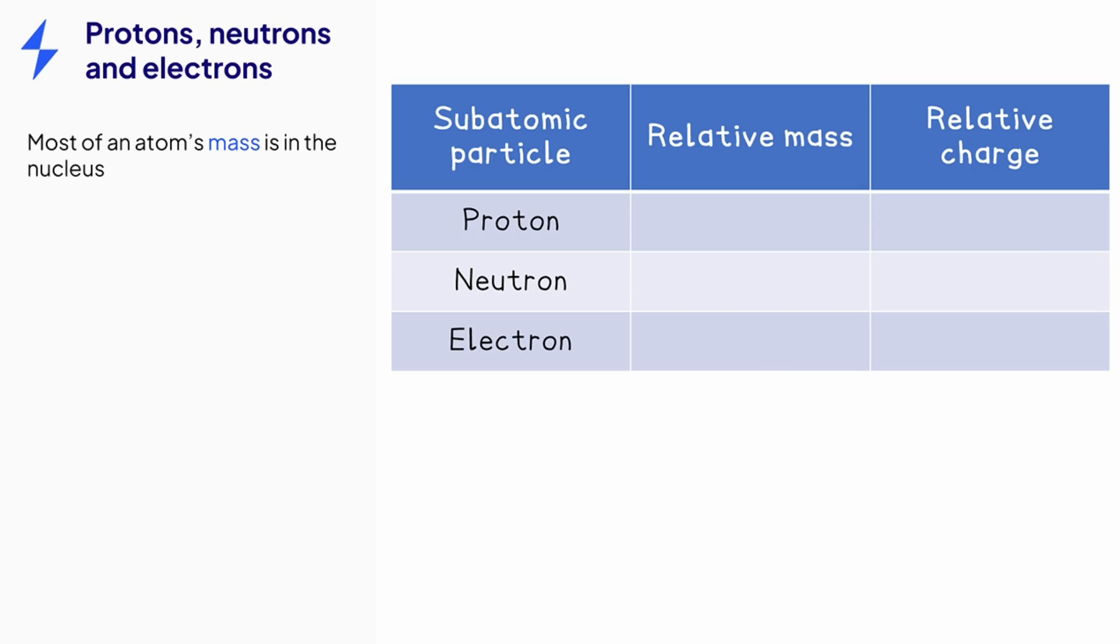When we talk about the mass of an atom, we're mainly talking about the nucleus. This is because the nucleus contains almost all of an atom's mass. Protons and neutrons both have a relative mass of one. By comparison, electrons have almost no mass.